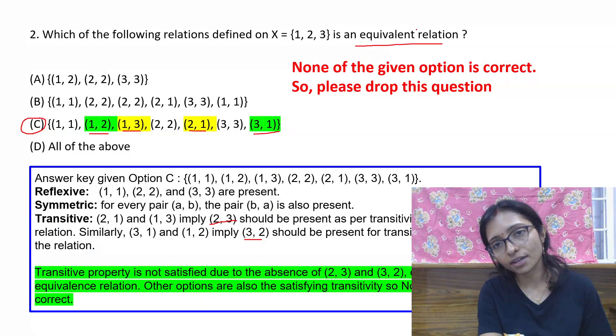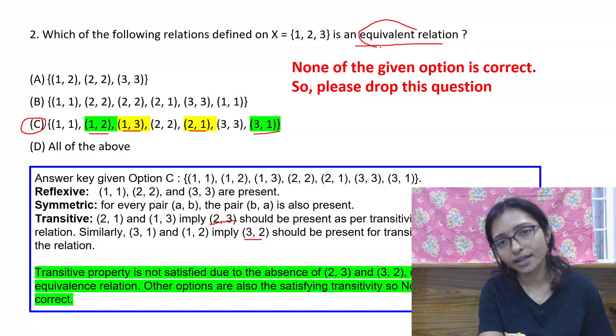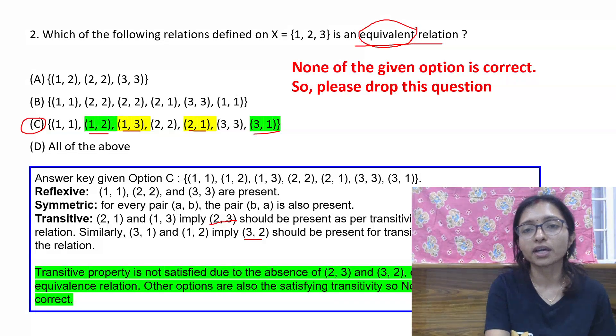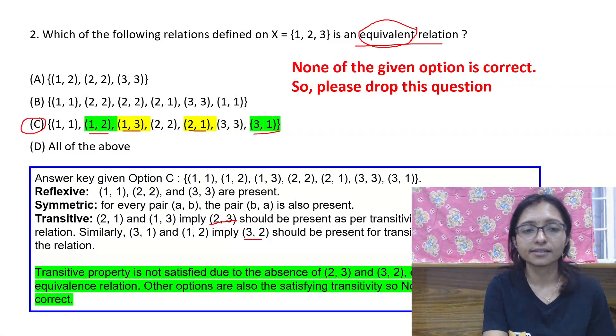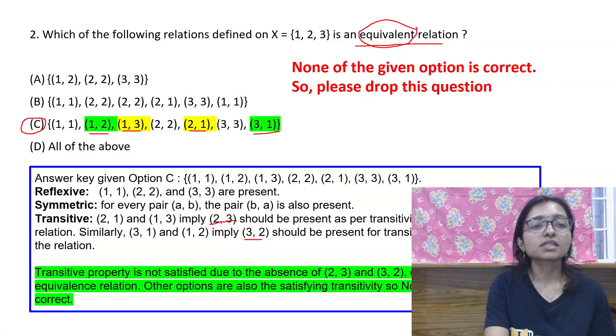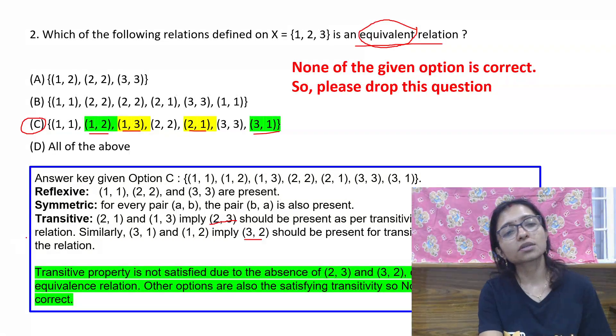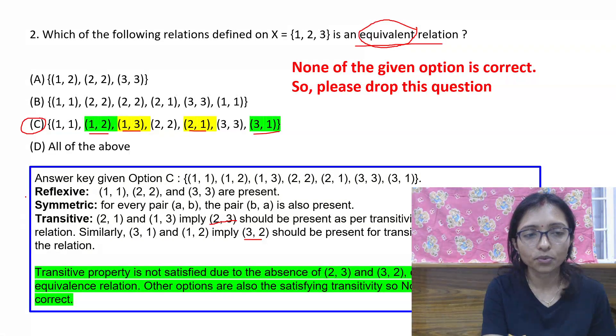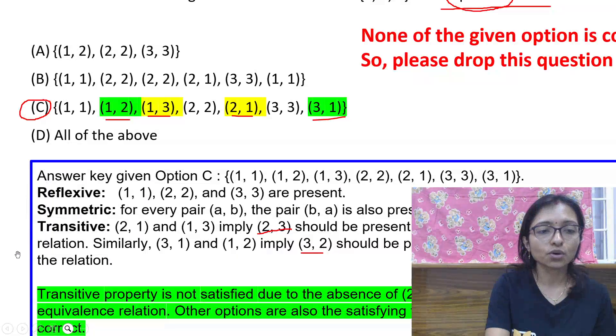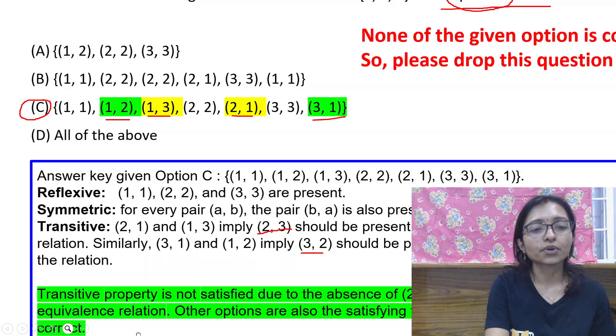Equivalence means reflexivity, symmetric, and transitivity support. Here it is supporting reflexivity, that is okay, but it is not supporting transitivity. That is why it is wrong.